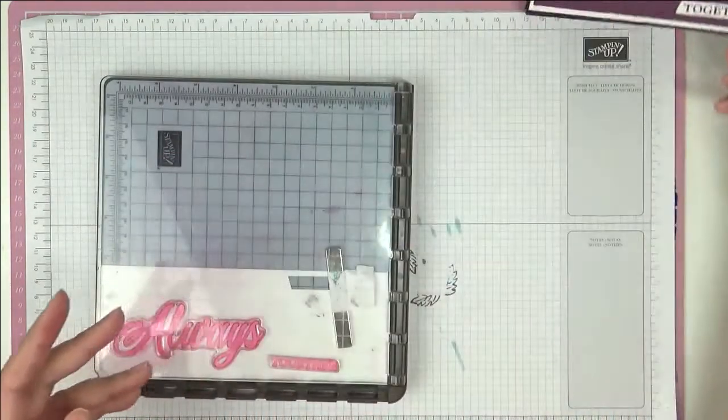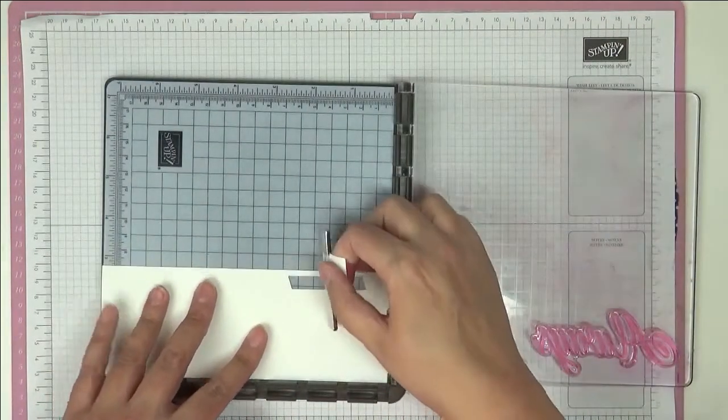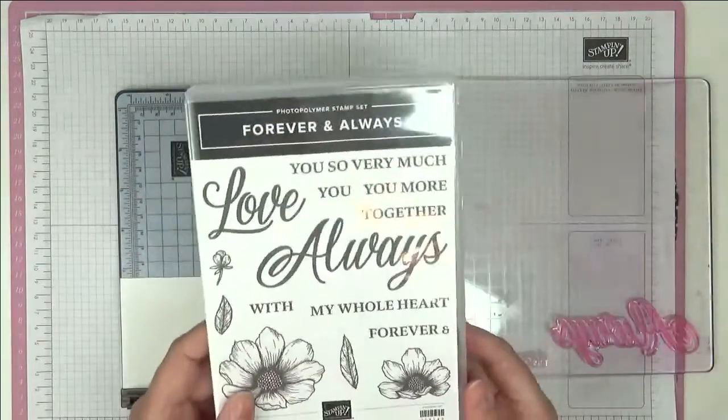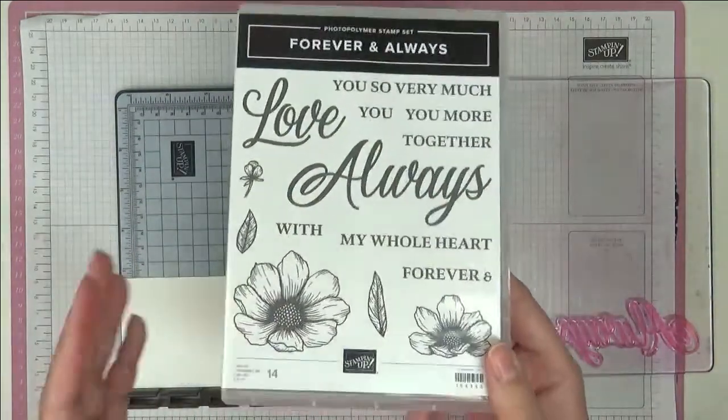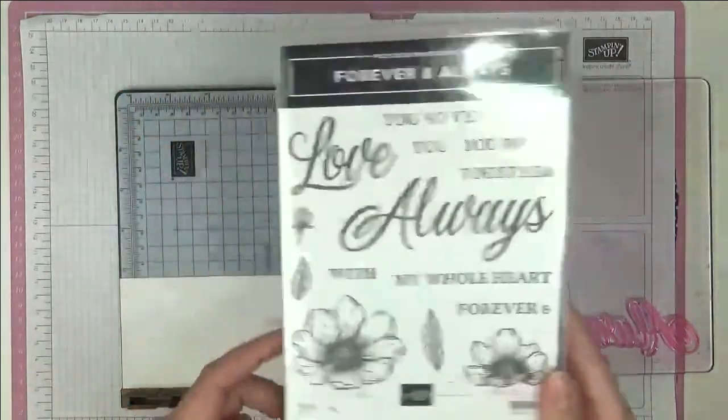So let me show you what I did. I have everything set up here in my Stamparatus, so let's push that back in. The stamp set we're going to use is this one called Forever and Always. I love it because it has these lovely big bold sentiments and I love the font, it's just marvelous.